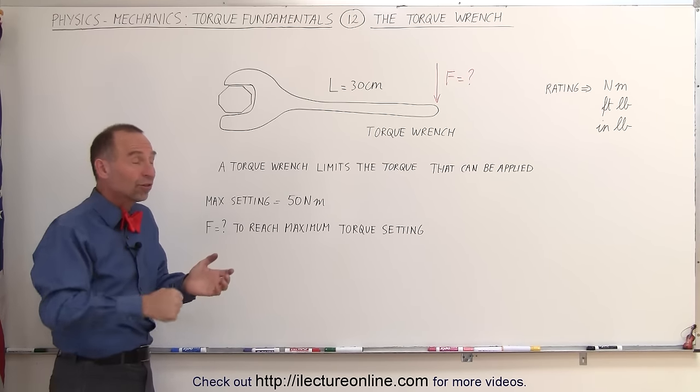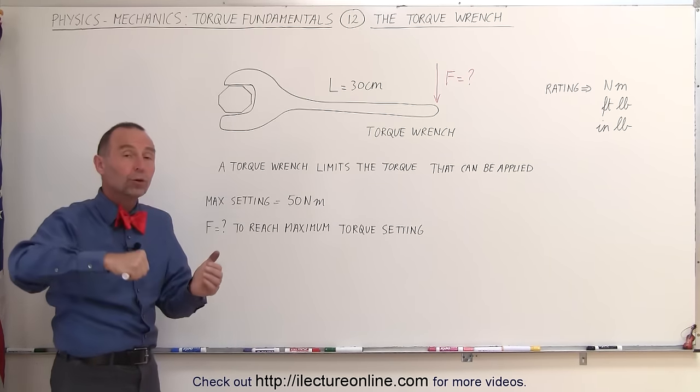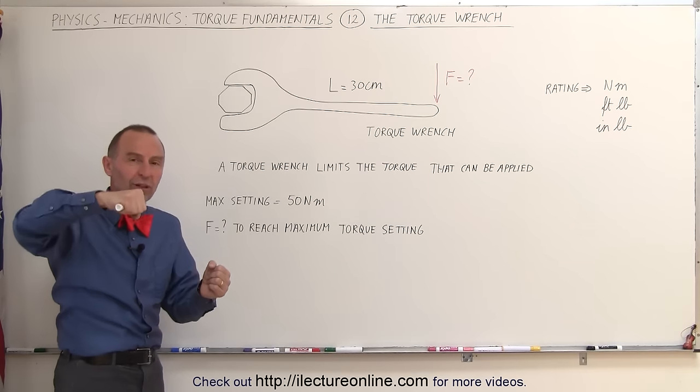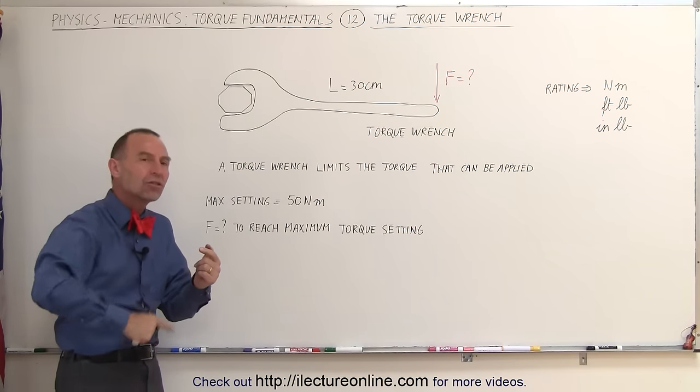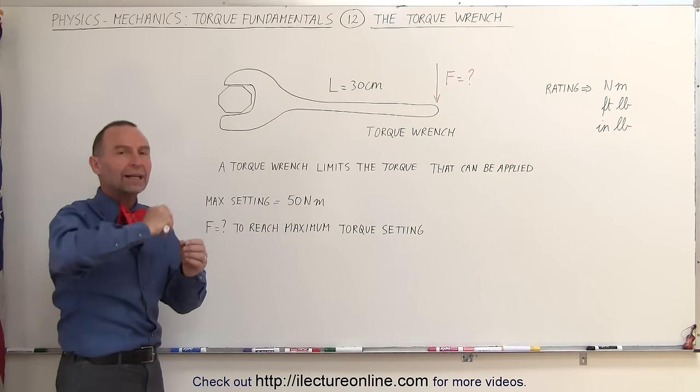Typically, the way a torque wrench works is if you try to apply more force, it will no longer tighten the bolt anymore, it will simply click through. In other words, it will not apply any additional force to the bolt to tighten it anymore.